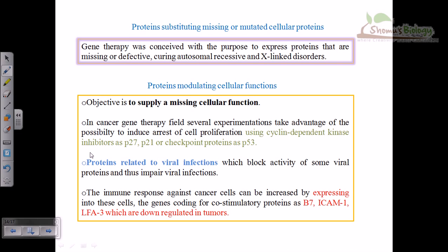One goal of gene therapy is that the proteins substitute the missing or mutated cellular proteins. Whatever we are injecting will substitute those missing or mutated proteins — for example, in curing autosomal recessive and X-linked disorders.